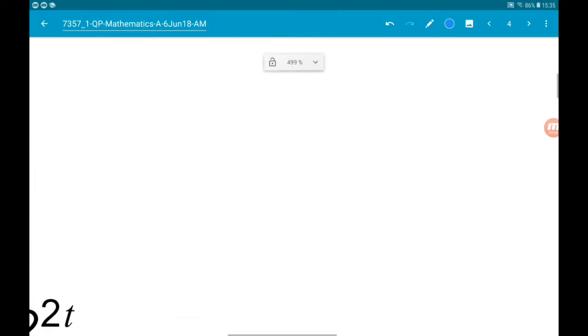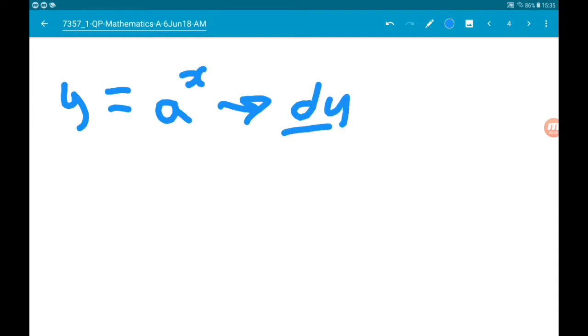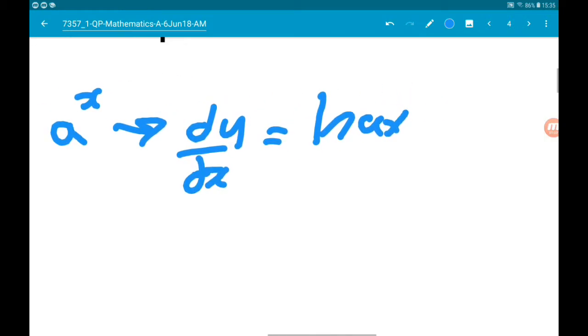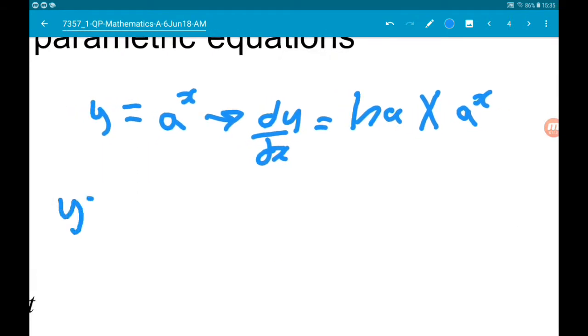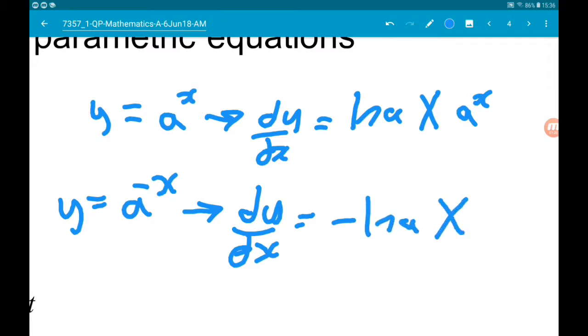I'll just remind you that if y is equal to a to the power of x, then dy by dx is equal to a log a times a to the power of x. And if y is equal to a to the minus x, then dy by dx is equal to minus log a times a to the power of x.